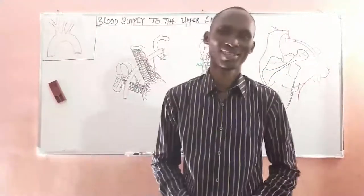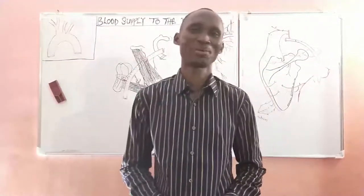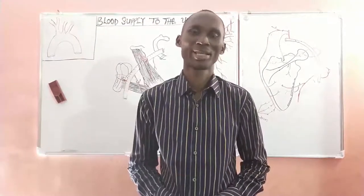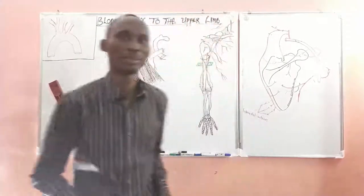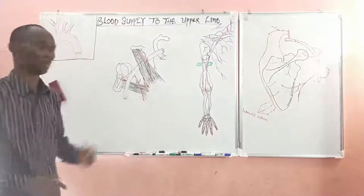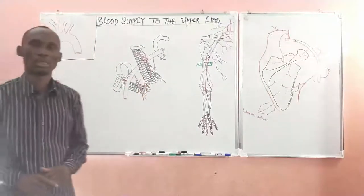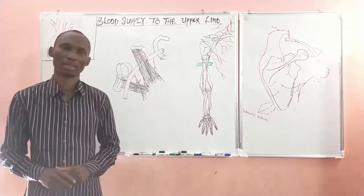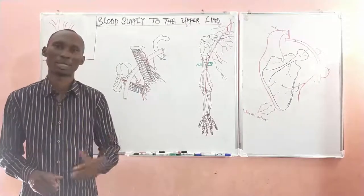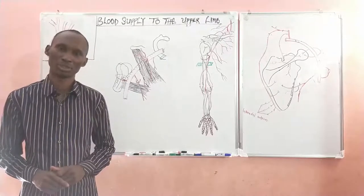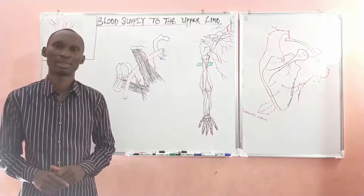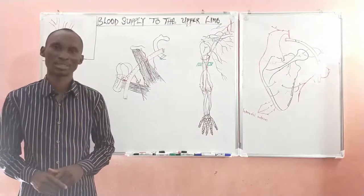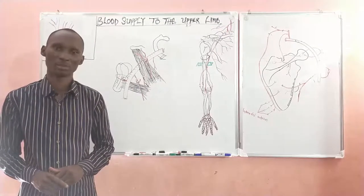Welcome to PALS. It's Prof. Sanyang with the Anatomy Lecture Series. In today's lecture, we'll be studying the blood supply to the upper limb. We'll be looking at the various components of blood supply, starting from the arterial supply to venous drainage and then lymphatic drainage. We'll start with the arterial supply.